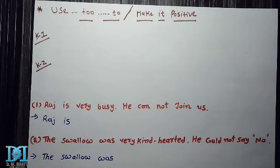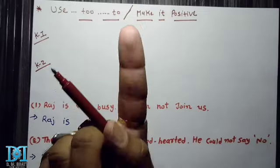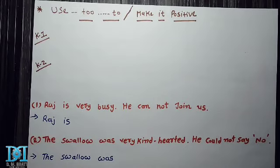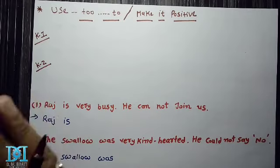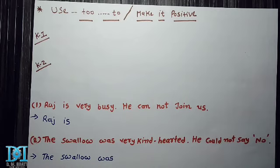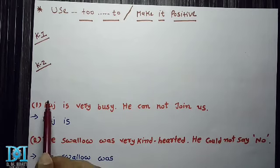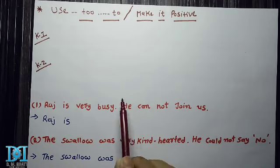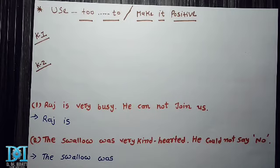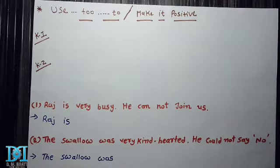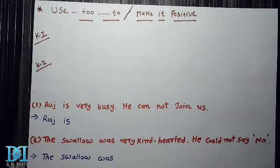We must understand that if a sentence has only one subject, or a single subject, that is the first example. Now listen carefully: if the subject given at the beginning of the first sentence is the same subject given at the beginning of the second sentence, then we should understand that the sentence has only one subject. Sometimes we can use an impact as well.